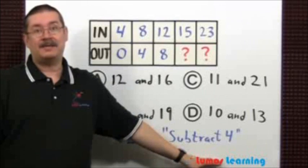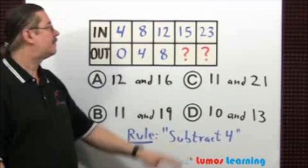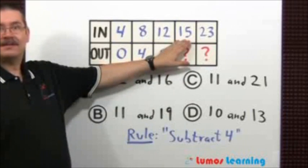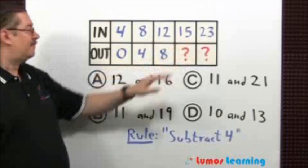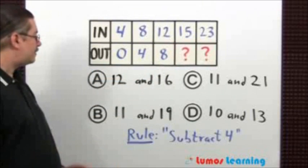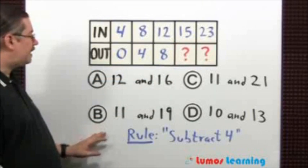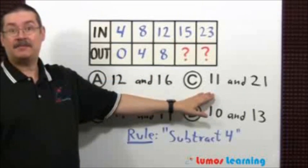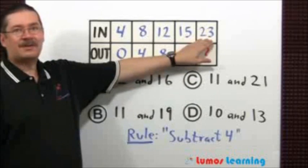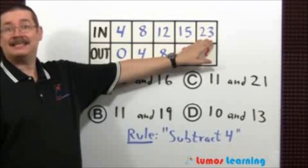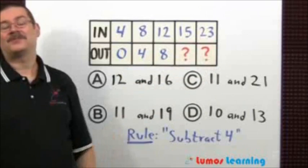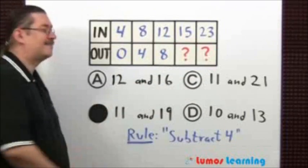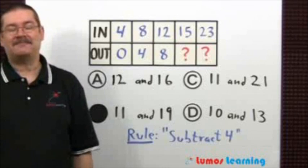Now let's apply it to find the missing numbers. 15 minus 4 is 11, so the answer is either choice B or C. 23 minus 4 is 19, so the answer is choice B.